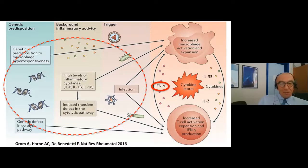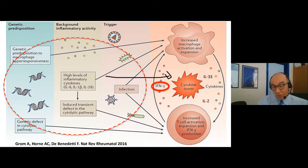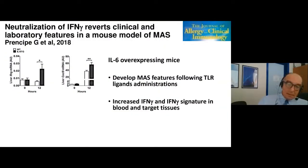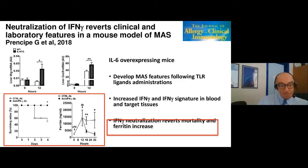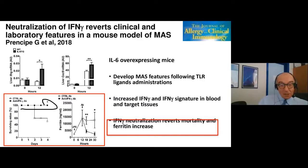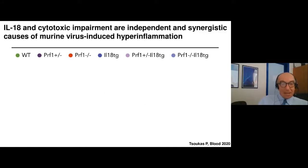The real problem is this shaded region where genetic predisposition, background inflammatory response, and infectious triggers all mix together and lead into the vicious circle — and we don't really know exactly how this happens. Can we treat it? In the IL-6 overexpressing mouse model, you see increased interferon gamma expression in the liver following LPS administration, increased CXCL9 expression; if you neutralize with an interferon gamma antibody, all the mice survive and ferritin decreases sharply following neutralization.